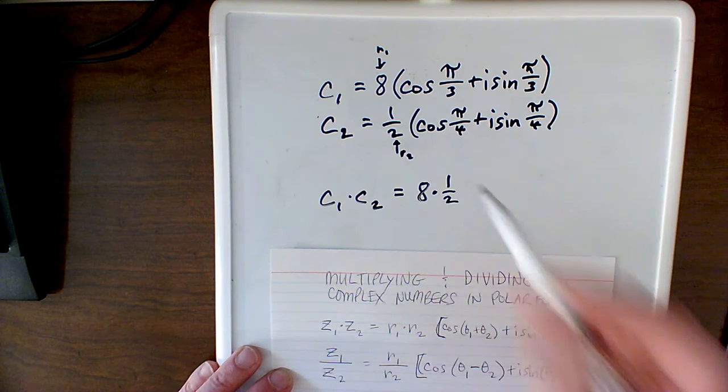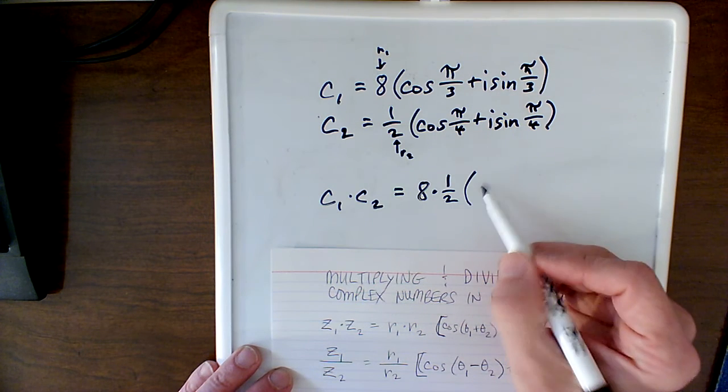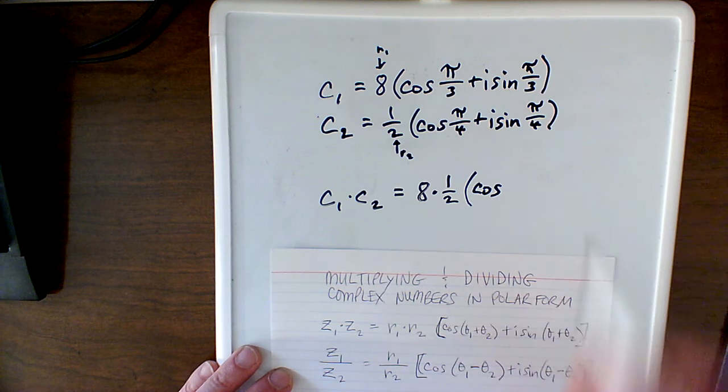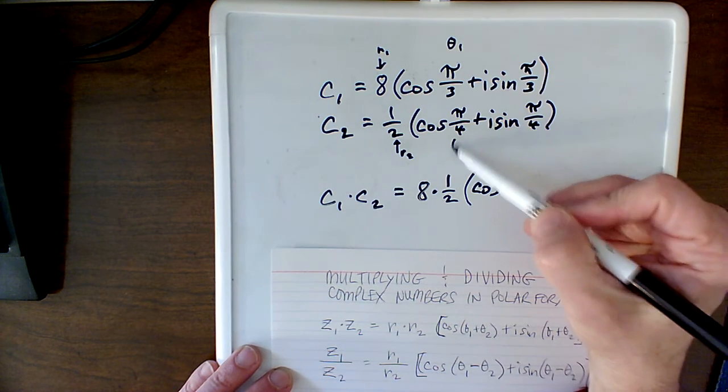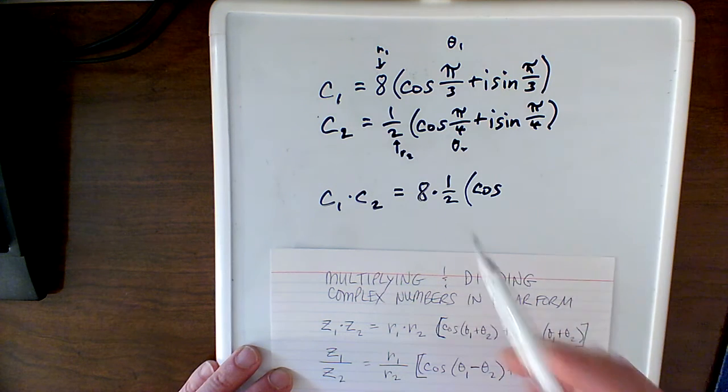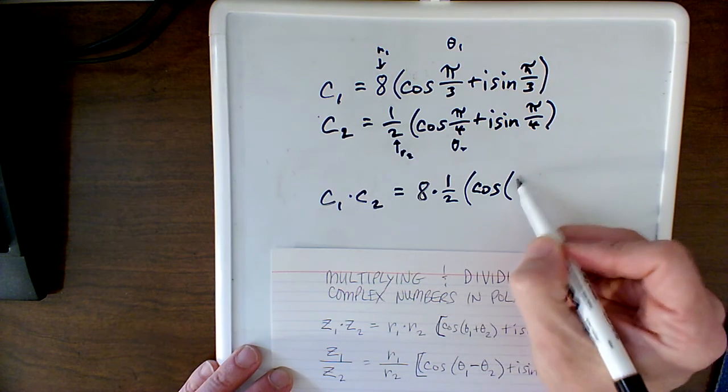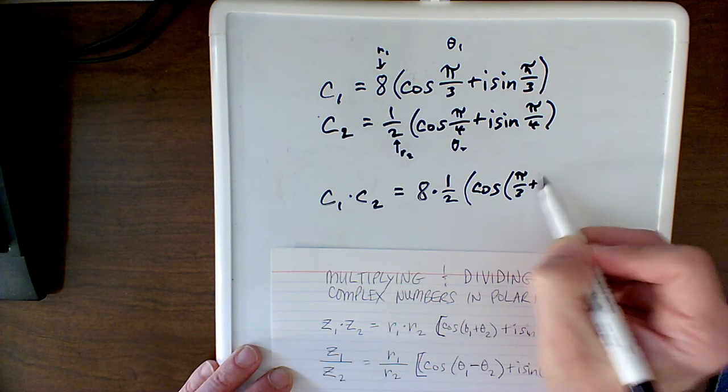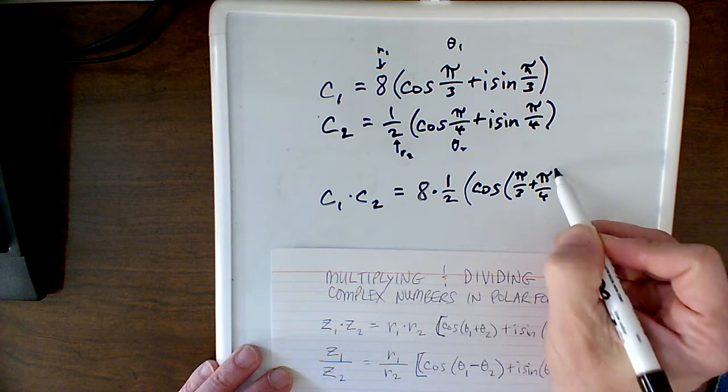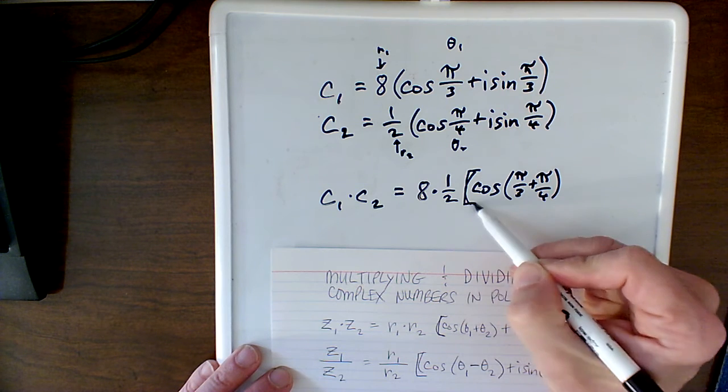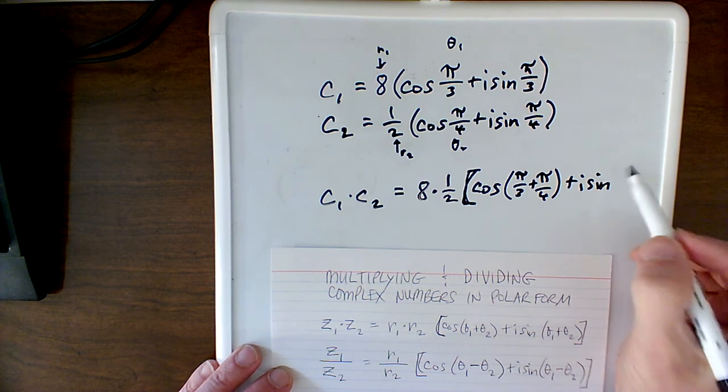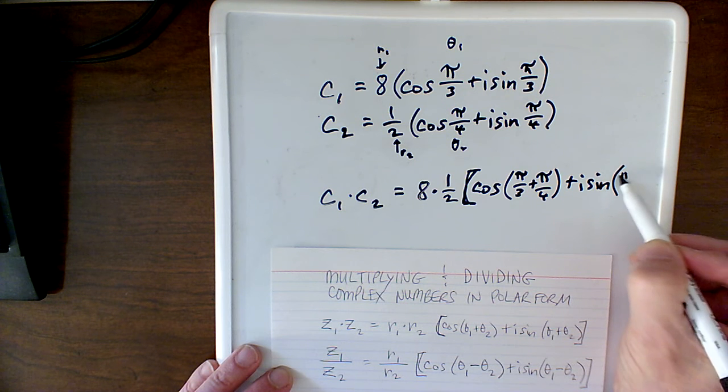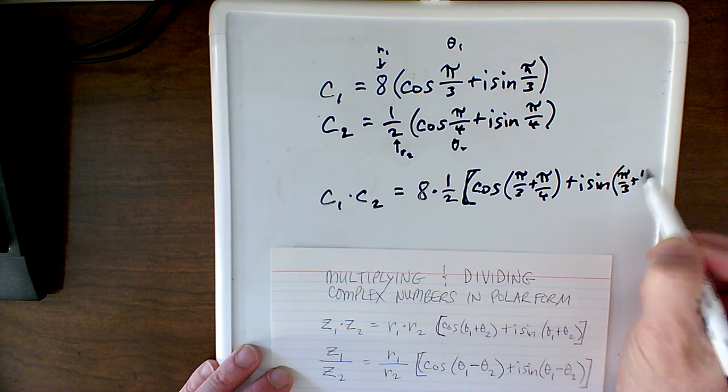And then I'm going to say cosine, and now we're doing theta 1 plus theta 2. So remember, this is theta 1 and this down here is theta 2, so I'm going to add. I'm going to do cosine pi over 3 plus pi over 4, and then I'm going to put a bracket here so we can tell this different from parentheses, plus i sine of the same thing, pi over 3 plus pi over 4.